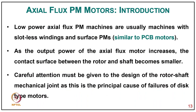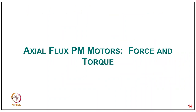Lower-power axial flux machines are usually machines with slotless windings and surface-mounted permanent magnets, similar to the PCB motor. As the output power of the axial flux motor increases, the contact surface between the rotor and shaft becomes smaller, and careful attention must be given to the design of the rotor-shaft mechanical joint, as this is the principal cause of failure of this type of motor.